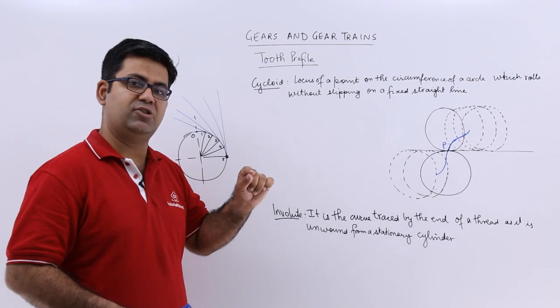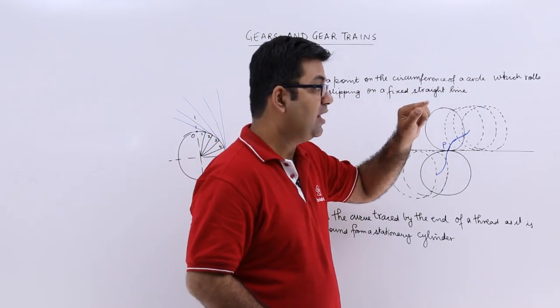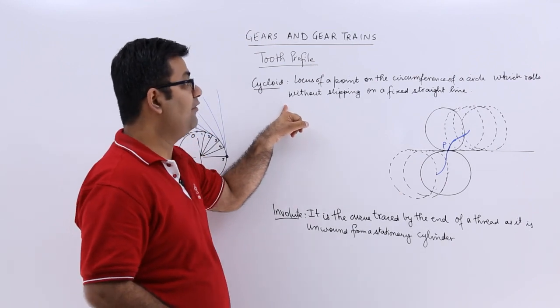A cycloid is a locus of a point on the circumference of a circle which rolls without slipping on a fixed straight line.